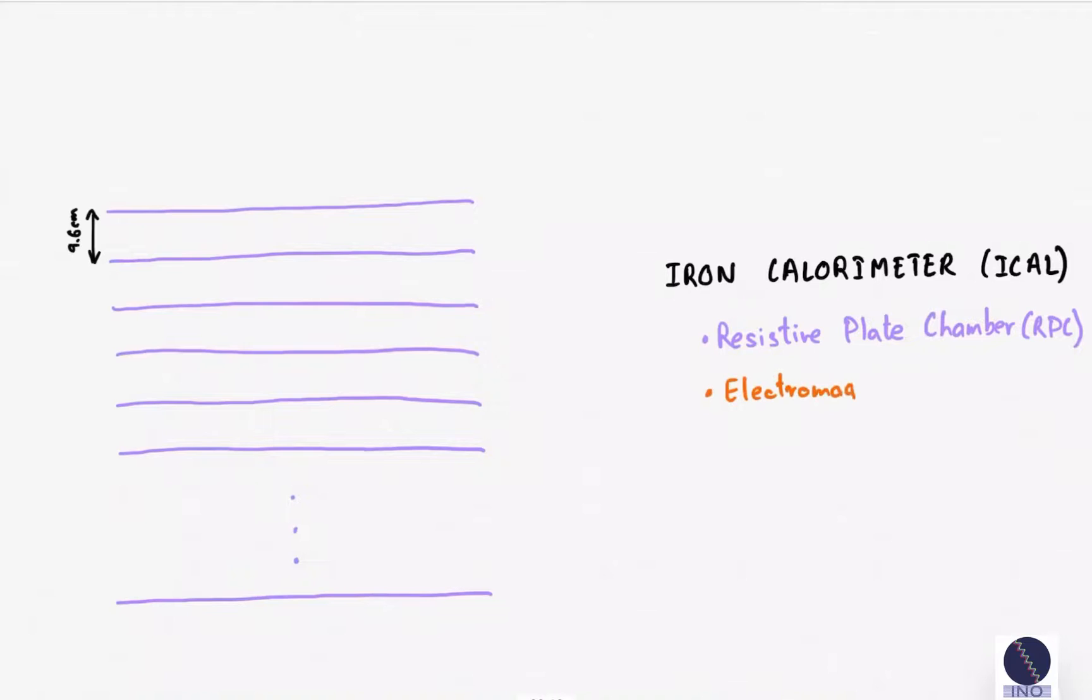There will be an electromagnet maintaining a magnetic field in the detector. We know that a magnetic field will curve the trajectory of a charged particle.